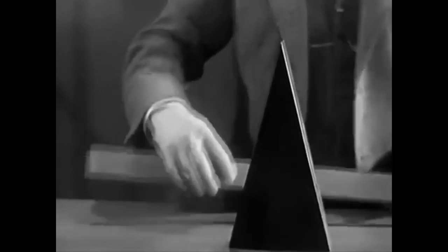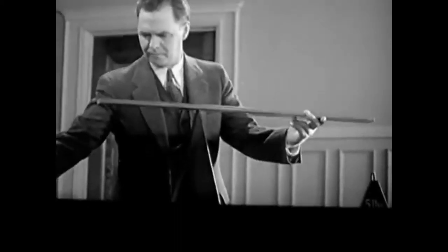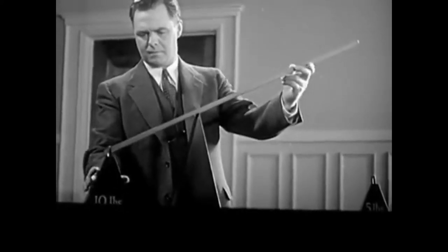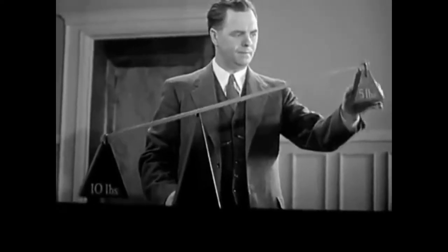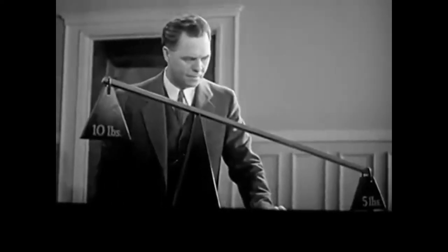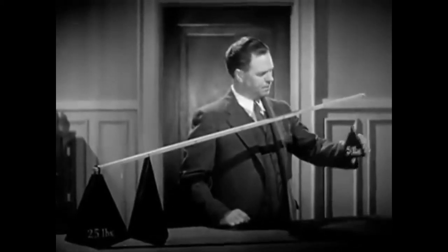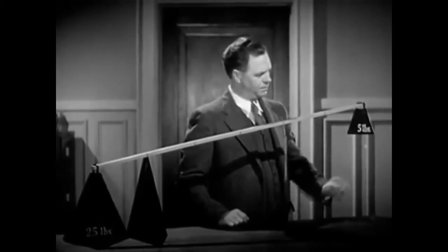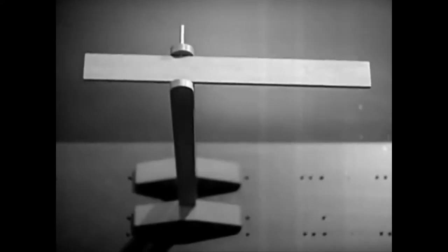Tough luck, old boy. Here's a place where a lever comes in mighty handy. Let's take the simplest kind of lever, a rigid bar working on a fixed support called a fulcrum. One end of this lever is twice as long as the other. Let's put a ten pound weight on this end, and now we'll put half as much weight on this end. Five pounds balance ten.